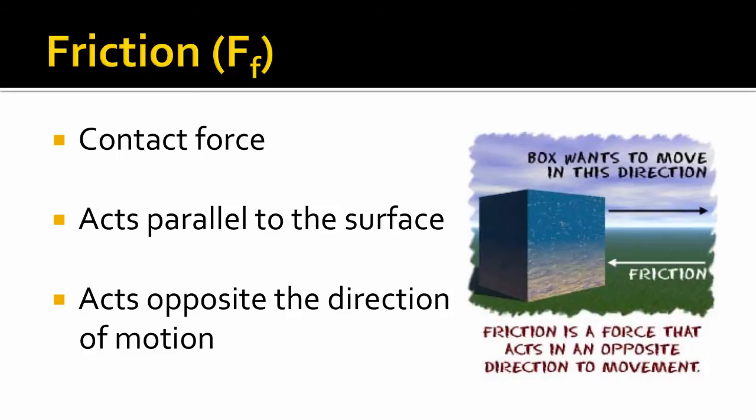Sometimes you'll encounter a problem where there is no motion, but there still is friction. Think about a book sitting on a slanted table. It's not moving, but there's still friction. The friction is the reason it's not moving. What you do in that situation, you would see what direction the block would move without friction, and then friction opposes that.